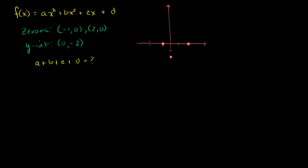Let's just assume there's some third root — let's say that third root is sitting out here someplace. A potential graph might look something like this: it curves and hits one zero, then the other zero, hits the y-intercept, and then goes back up. There are many ways you could draw something that intersects these three points and that y-intercept. But let's see if we can figure out the coefficients.